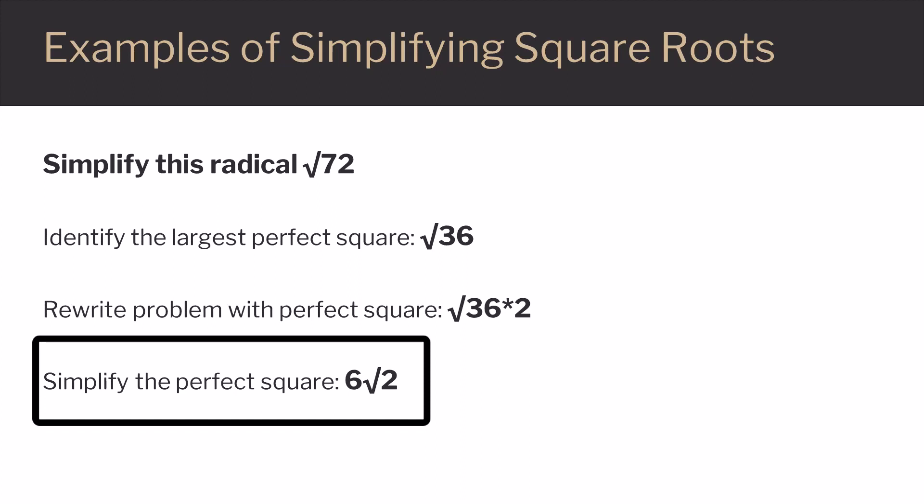We simplify our perfect square. The square root of 36 is 6, which we take outside the root symbol. We're left with the square root of 2. So our final answer is 6 times the square root of 2.